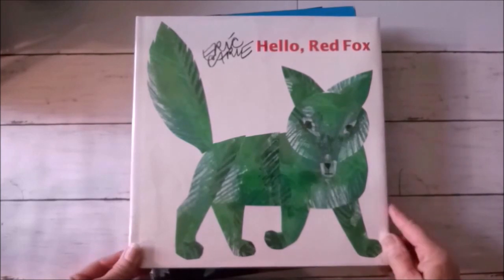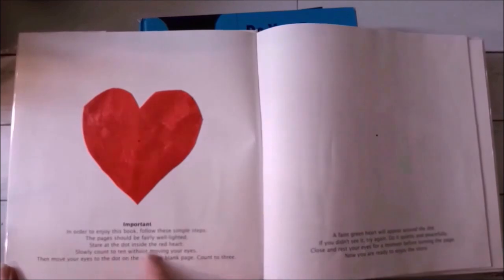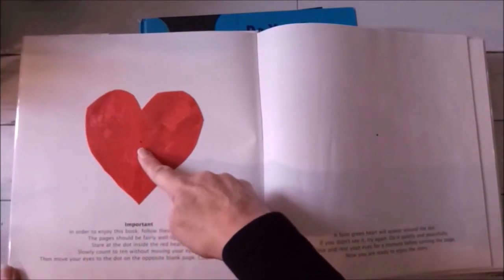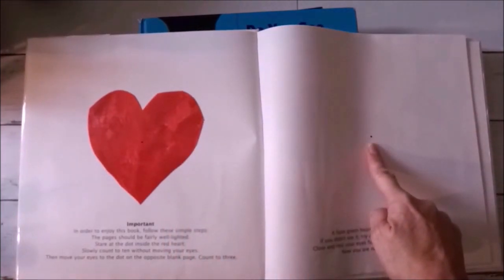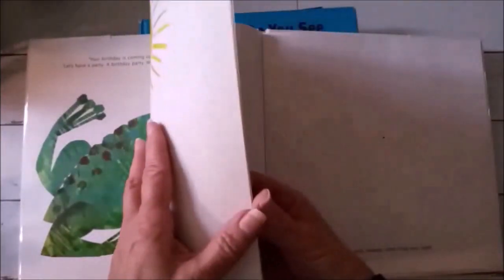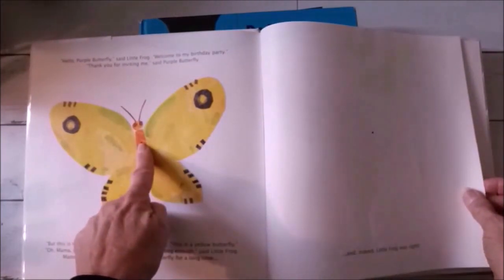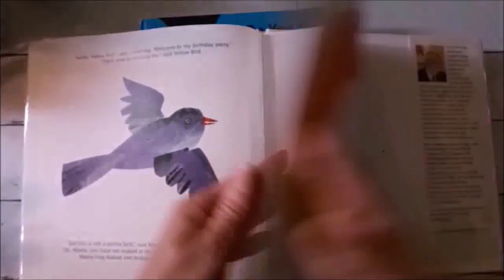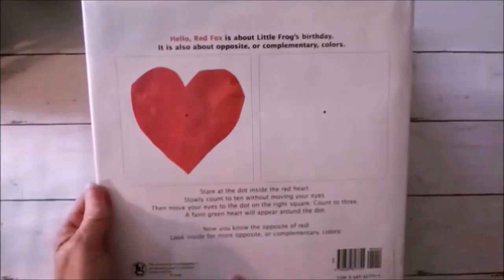There are some books you might be interested in checking out at the library. This one is by Eric Carle. It's called Hello Red Fox. In this book you are instructed to follow the simple steps. You have to stare at the dot inside of the shape. Slowly count to 10 without moving your eyes and then move your eyes to the dot on the opposite page and count to three. We'll see what happens. And that's with each, there's a story that goes with it. And if you look at the butterfly the dot on the butterfly, count to 10 look over here you'll see something the same with the bird and all the other pictures. Kind of a fun little book that is about optical illusions and it teaches you about complementary colors.